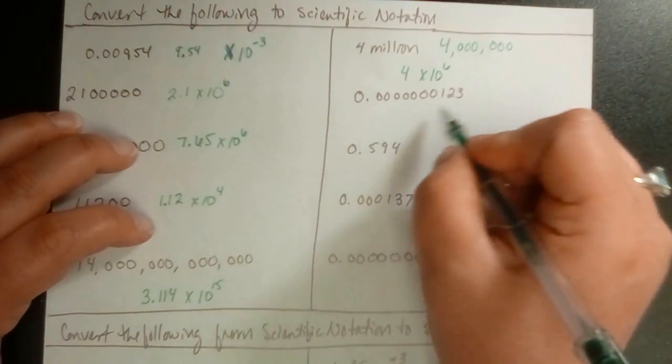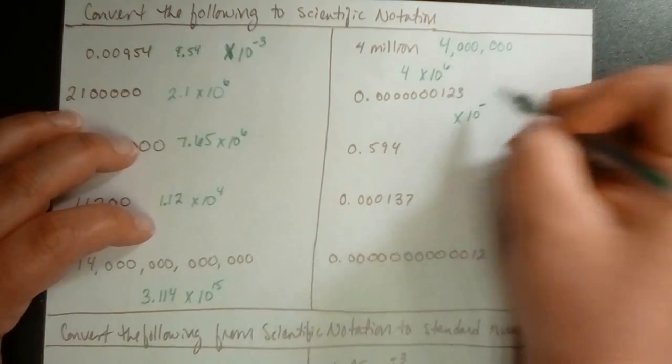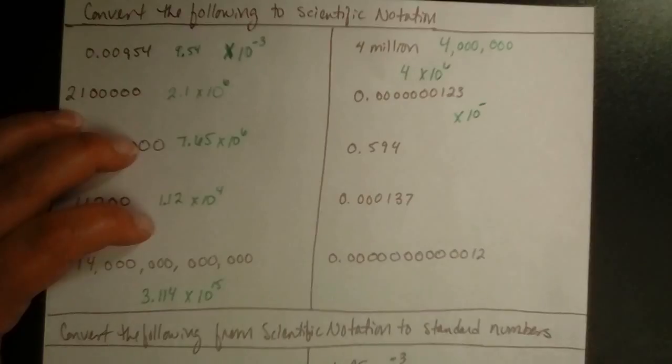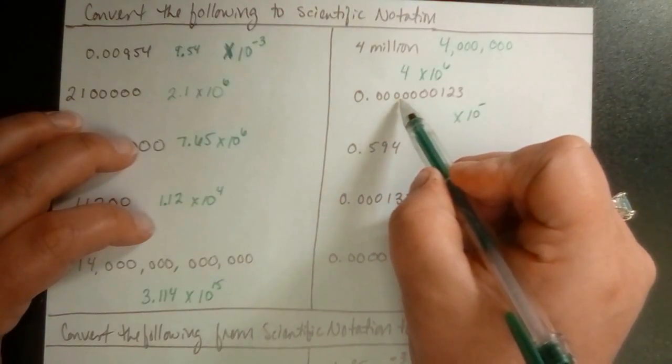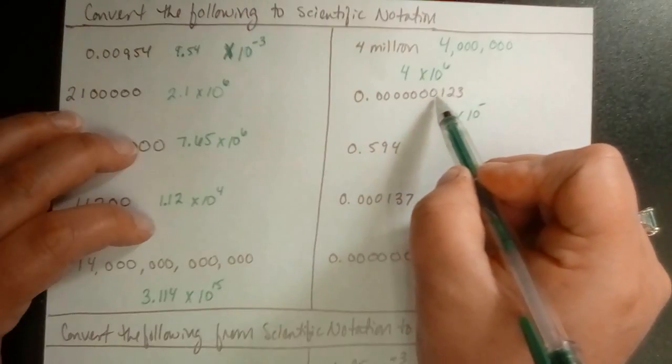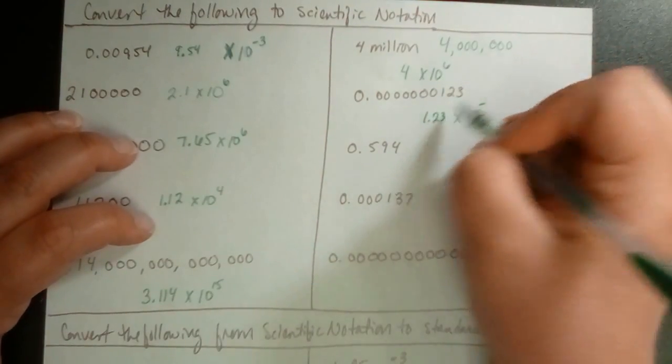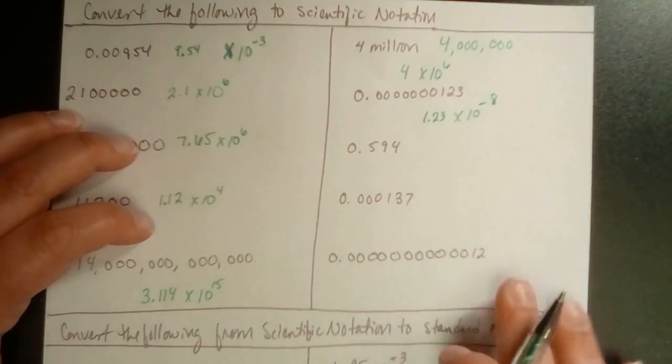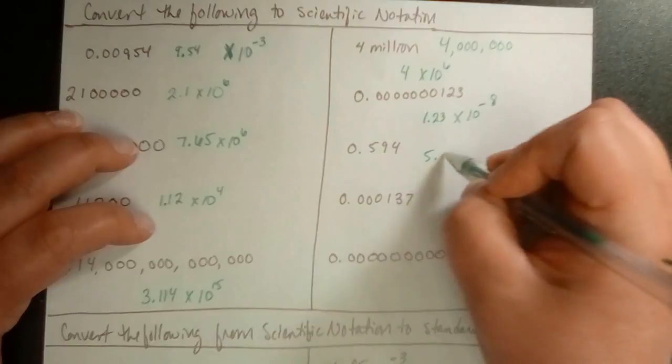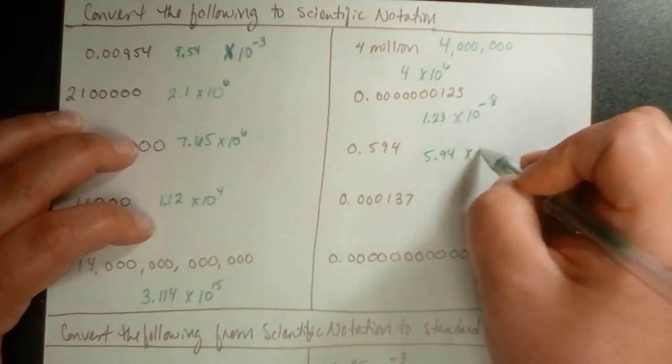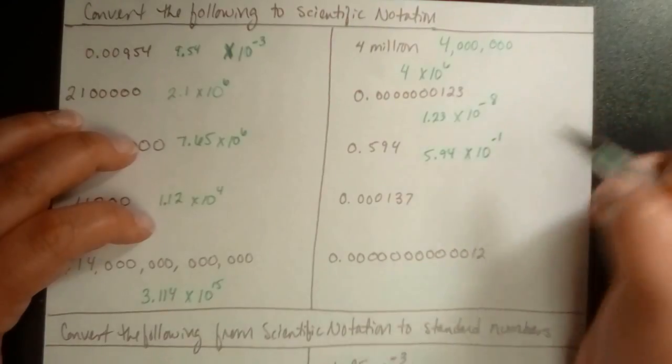Now, we're going to do something that's smaller than 1. So, we're going to go times 10 to the negative something. And we're going to move this to the right. 1, 2, 3, 4, 5, 6, 7, 8. So, it's 1.23 times 10 to the negative 8th. I hope you all are catching on now. It's 5.94 times 10 to the negative 1. We just move it one time. So, it's negative 1.